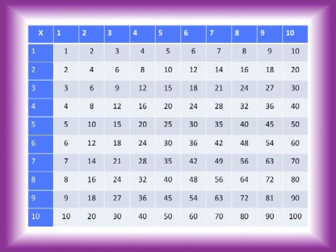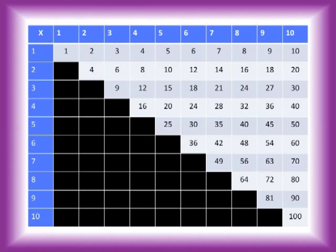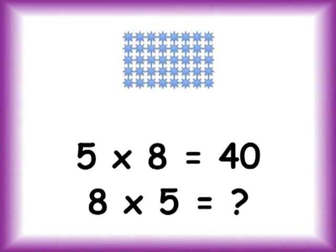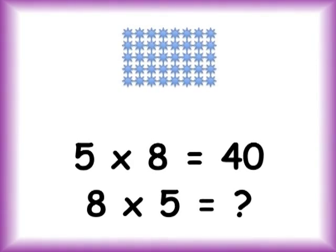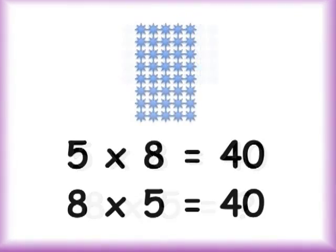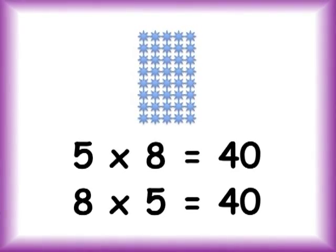This property cuts your memorizing the times tables almost in half. If you use it, you don't have to memorize all of this. You only have to memorize this much. Try it. If you know that five times eight equals 40, then what is eight times five? That's right. It's 40. That was so fast.